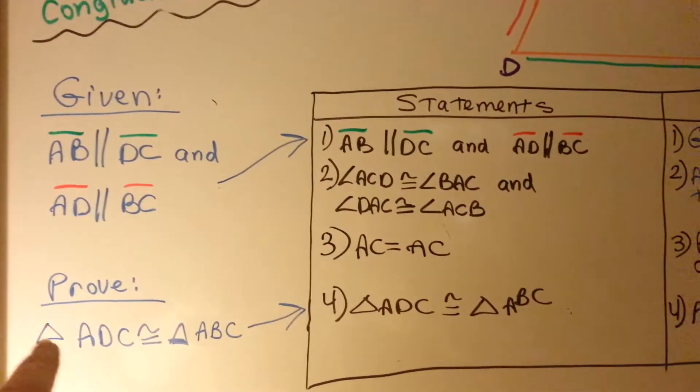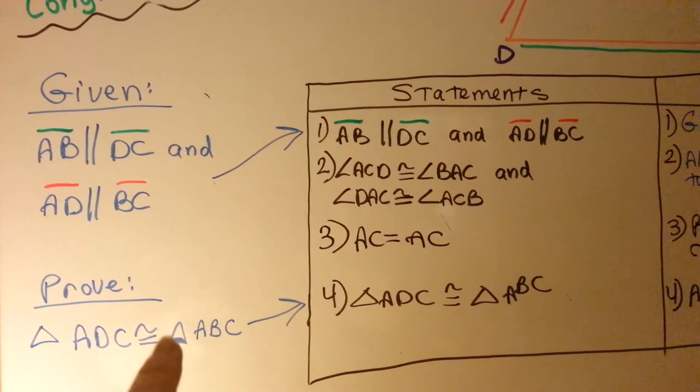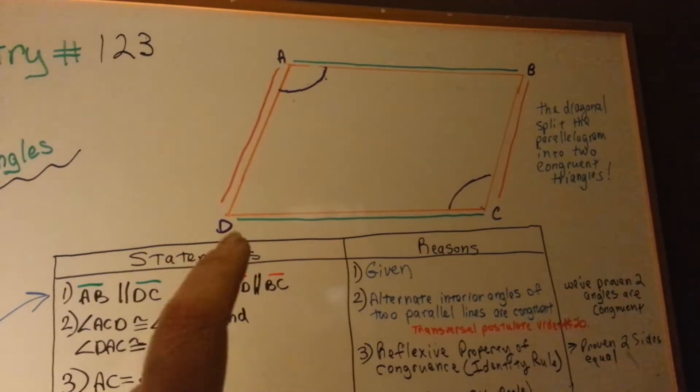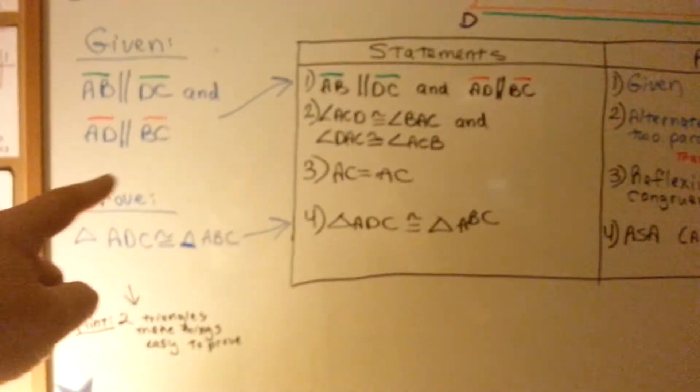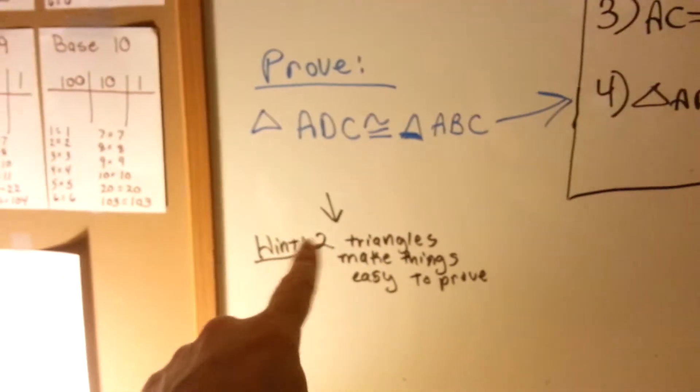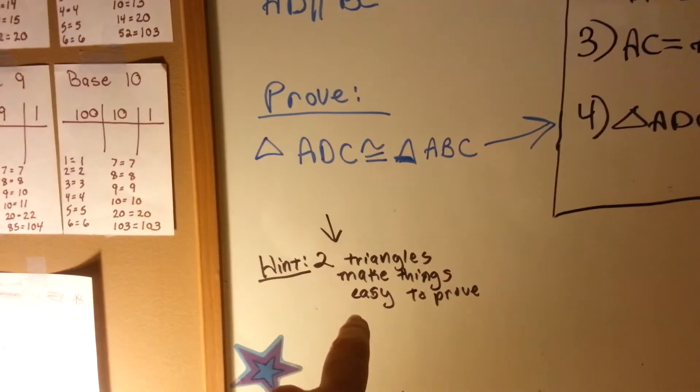They want us to prove that triangle ADC is congruent to triangle ABC. ADC and ABC. I only see a parallelogram. What's going on? Guess what? It's a hint. Two triangles make things easier to prove.